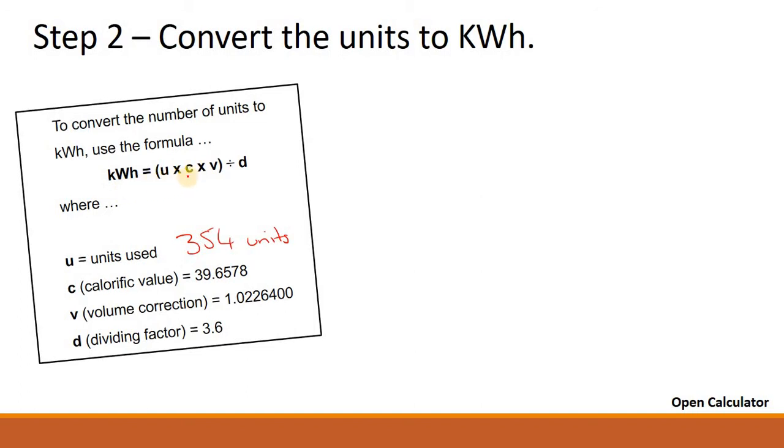And we're given it so we can plug it into this formula here. Kilowatt hours equals U times C times V, all divided by D. Now, some people say, well, where do these numbers come from? Truth is, I don't know. And I don't need to know.